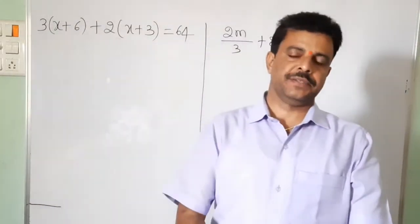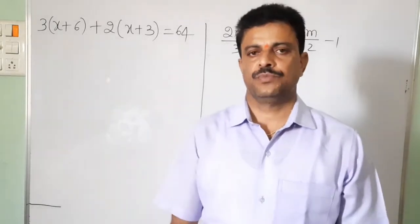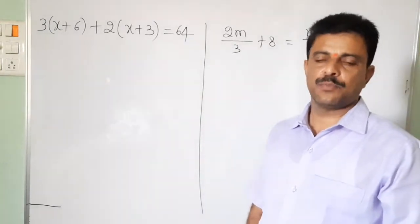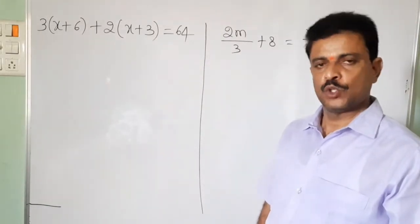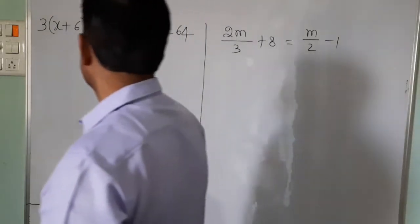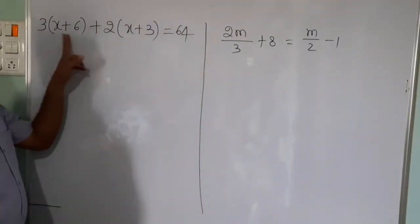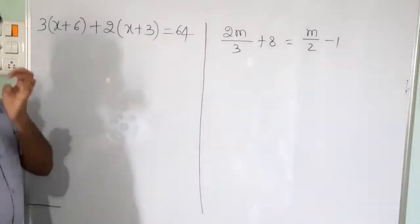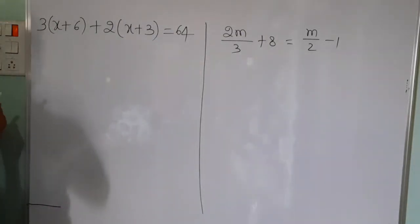Good morning dear students. Today let us continue the exercise problems. We have three remaining problems and I will finish this exercise today. The first problem is: 3 into (x plus 6) plus 2 into (x plus 3) is equal to 64. First, simplify by expanding all multiplications.